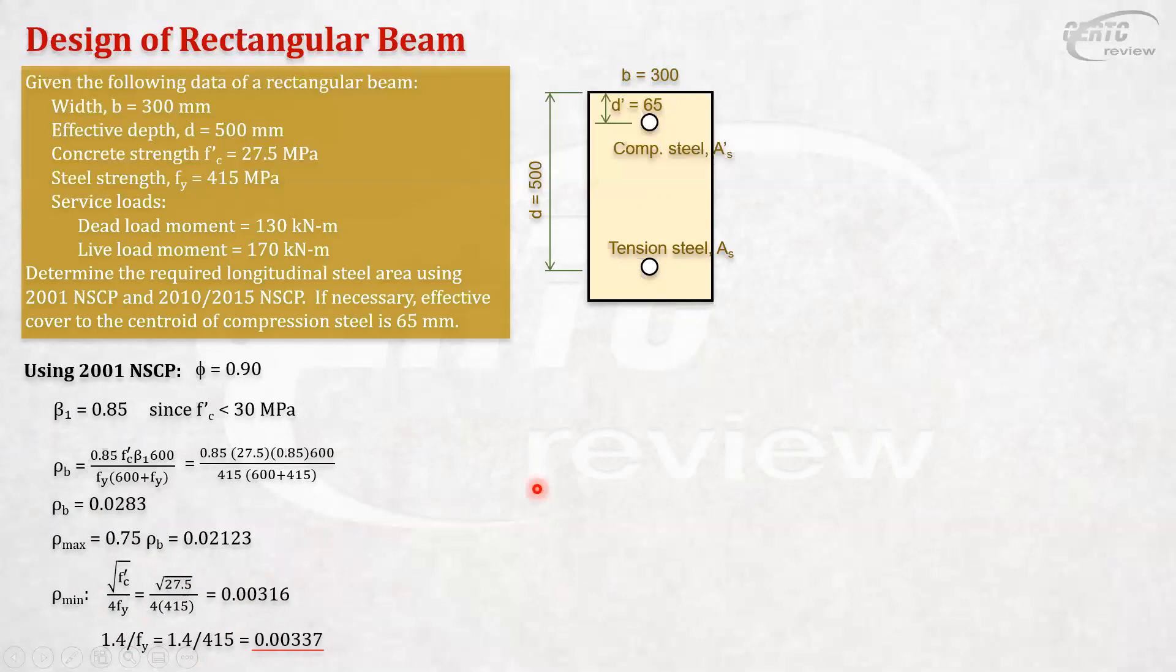Continuing on, in 2001, the required strength MU is 1.4 MD plus 1.7 ML, and that is 470. This is large compared to part 1. The same procedure: let's assume this is singly reinforced. Then we can use this equation, Rn equals MU over phi BD squared. Assuming singly reinforced, of course, assuming that steel will yield. That will always follow if you assume it is singly reinforced. 470 is our MU, our BD is given, our phi is 0.9. So that's 6.978 MPa.